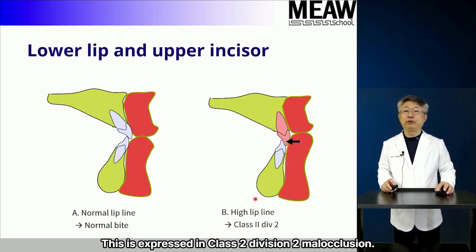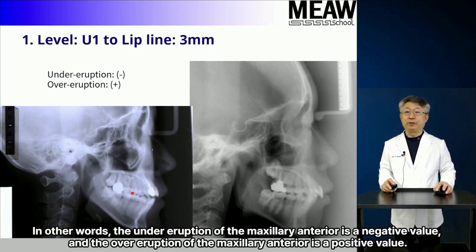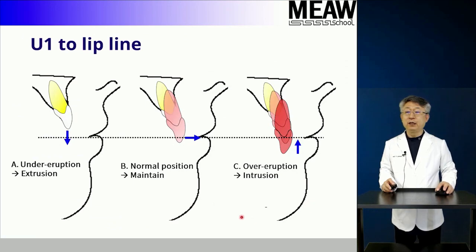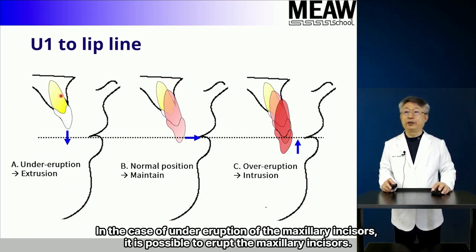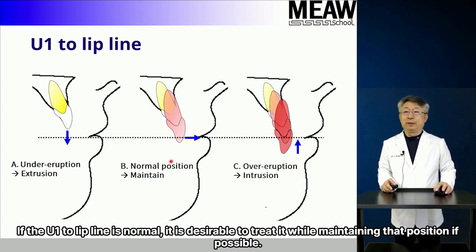This is expressed in class 2 division 2 malocclusion. It is relatively easy to measure the level with the yon-to-lip line, and the normal value is plus 3 mm. The under-eruption of the maxillary anterior is a negative value, and the over-eruption of the maxillary anterior is a positive value. In the case of under-eruption of the maxillary incisors, it is possible to erupt them. In the case of over-eruption, it is recommended to intrude the maxillary incisors and not extrude. If the yon-to-lip line is normal, it is desirable to treat it while maintaining that position if possible.